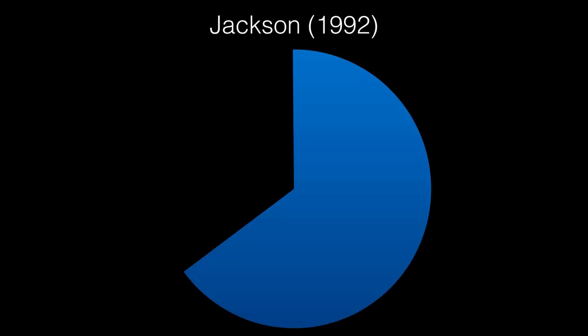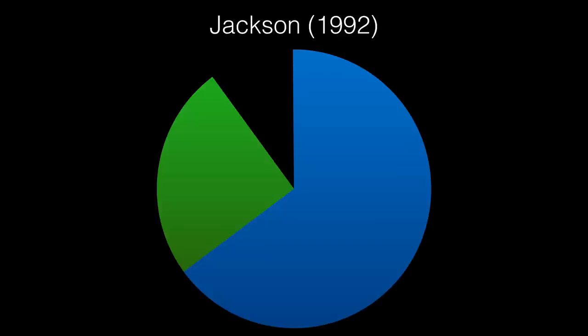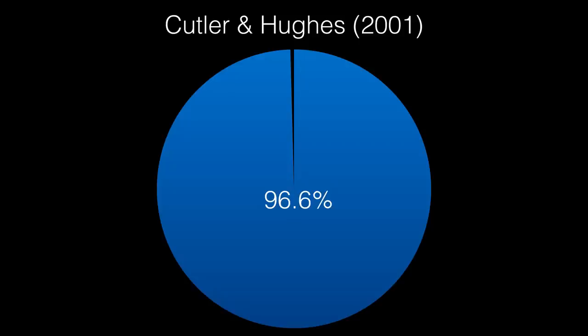That research relied on jurors' own self-reports of comprehension — whether they thought they could understand the evidence and judicial instructions — and also the reports of the lawyers involved. Other self-report data agrees with these findings. In a study by Jackson in 1992, 65% of jurors said they understood all of the judge's instructions and a further 25% said they understood most of the instructions, giving a total of 90%, much the same as Zander and Henderson found. Consistent with this, Cutler and Hughes in 2001 reported that 96.6% of jurors said the judge's instructions were clear and understandable.